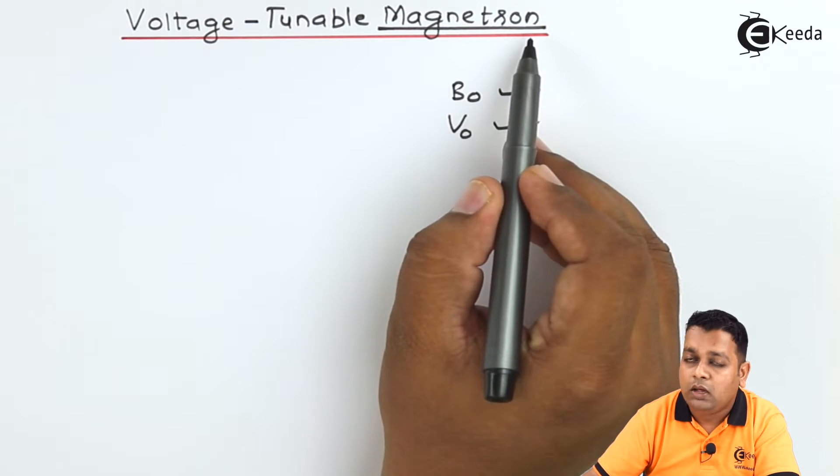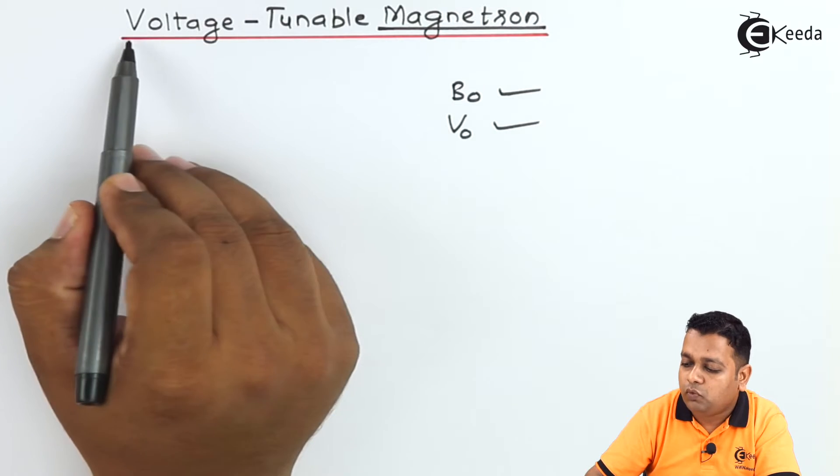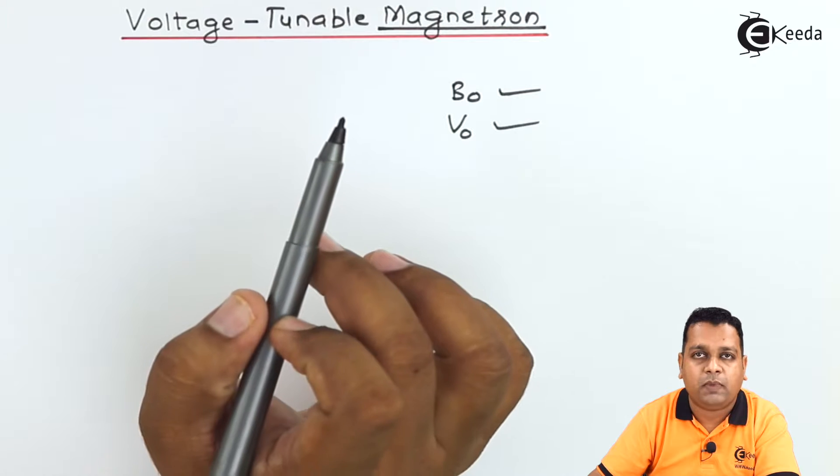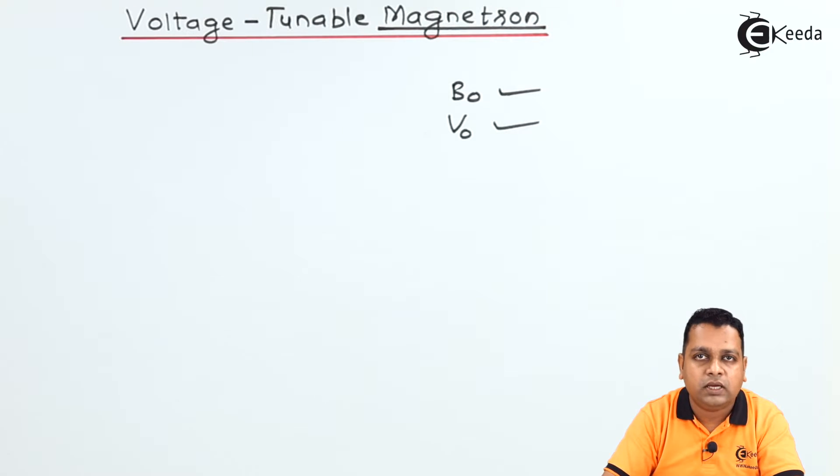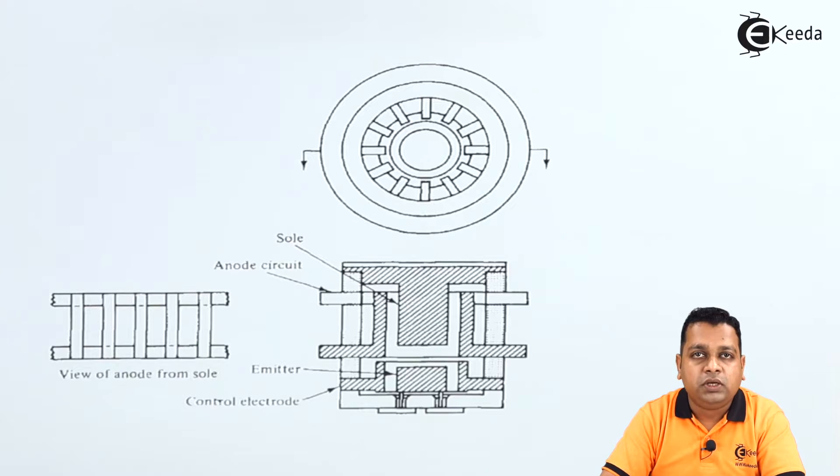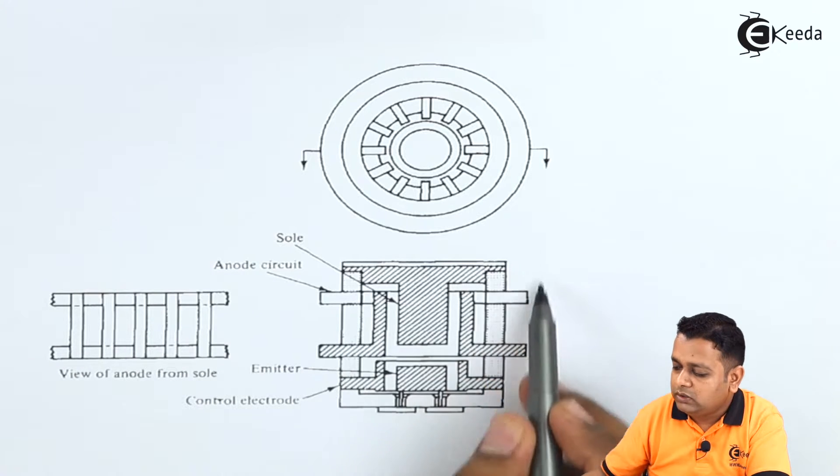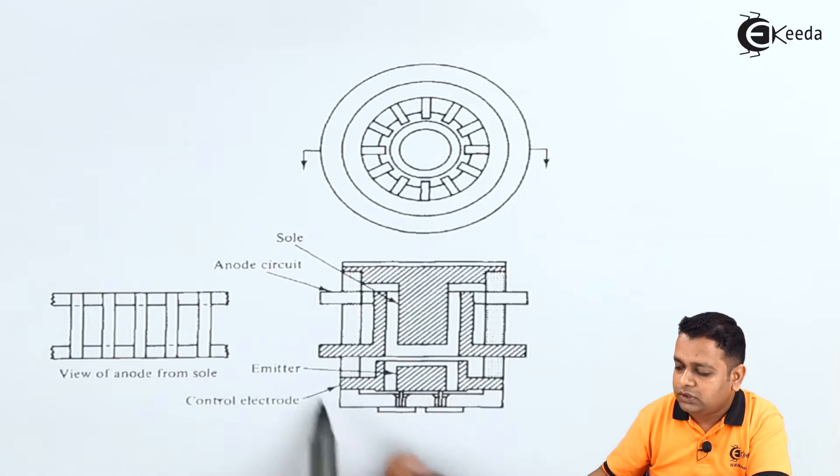So this is the magnetron but along with we have the voltage tunable facility in this particular type of the magnetron. So how it is, let us see the diagram.